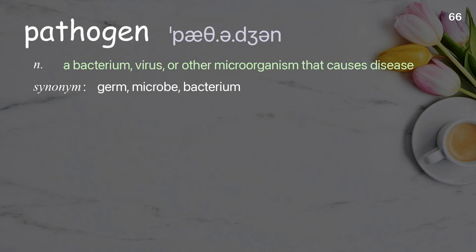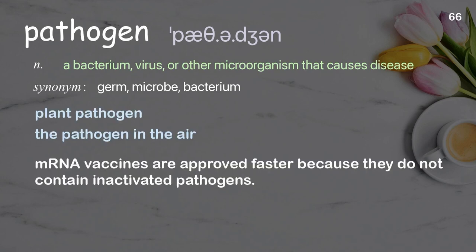Pathogen: a bacterium, virus, or other microorganism that causes disease. Examples: plant pathogen, the pathogen in the air. mRNA vaccines are approved faster because they do not contain inactivated pathogens.